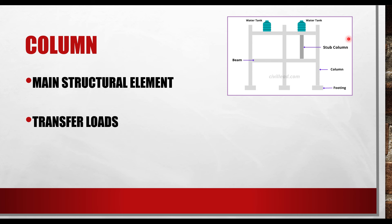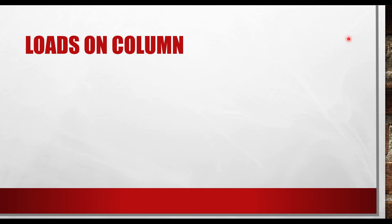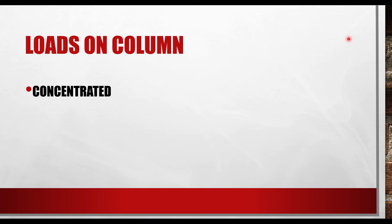Columns are generally vertical in nature, but sometimes they can be slanted depending on aesthetic and structural needs. There are two major forms of load on columns: we have the concentrated load and we also have the lateral loads.